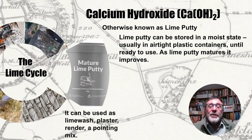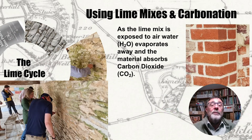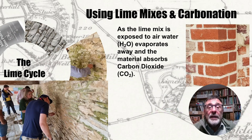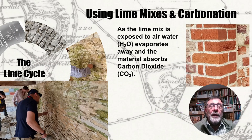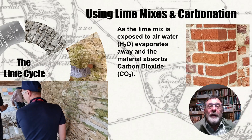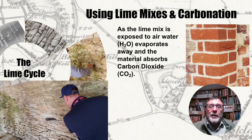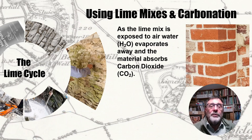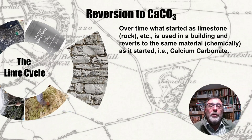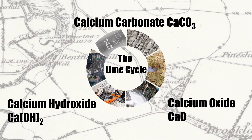However, as soon as it is used in a building — such as mixed with an aggregate to form a mortar, render, or pointing mix — a process called carbonation begins. Carbonation is where the water evaporates away but carbon dioxide is absorbed. If we look at the chemical formula, we realise we have got back to calcium carbonate. Therefore, the material used in our building is chemically the same material that we started with, hence why we call this the lime cycle.